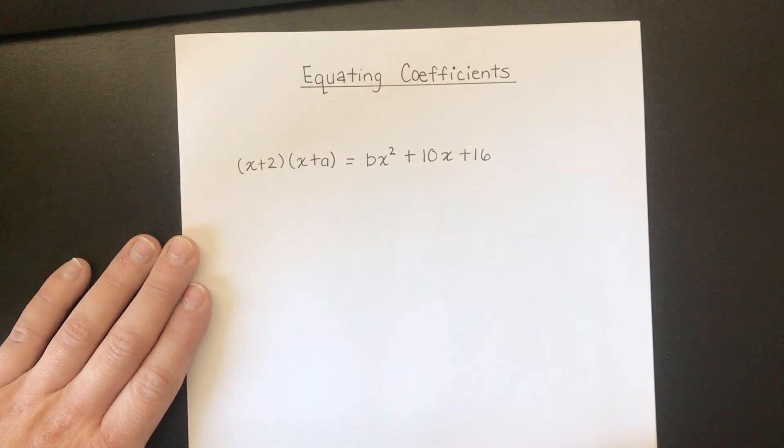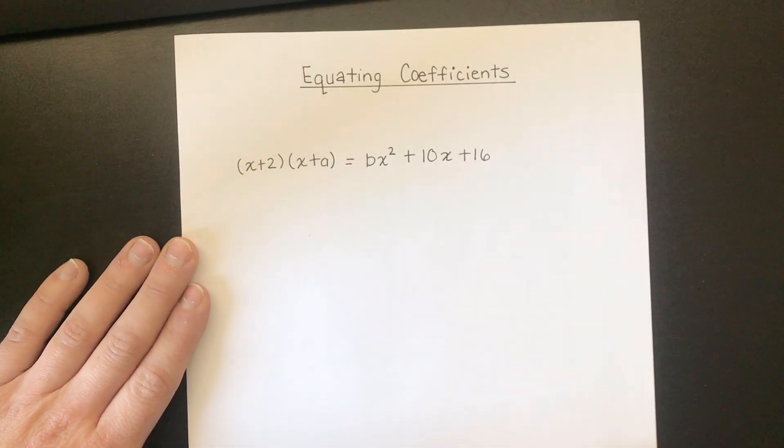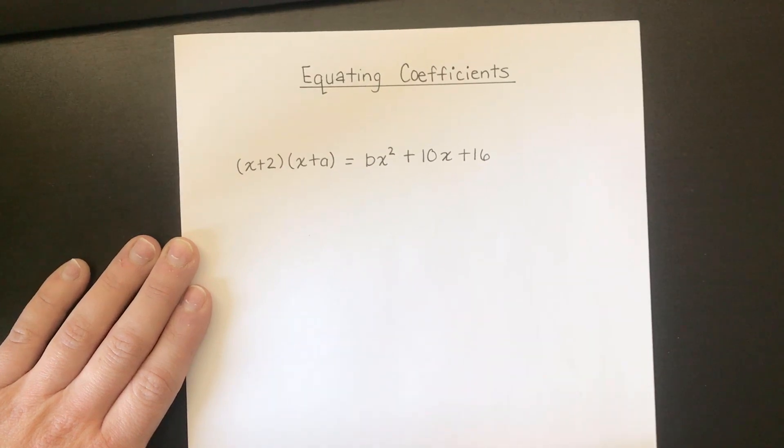So this is the example from the PowerPoint that I put up. It is example 4, it's slide 7. It says find the values of a and b such that (x+2)(x+a) is equal to bx² + 10x + 16.